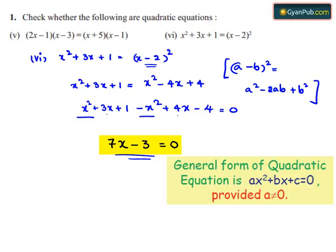We know that the general form of a quadratic equation is ax square plus bx plus c is equal to 0.